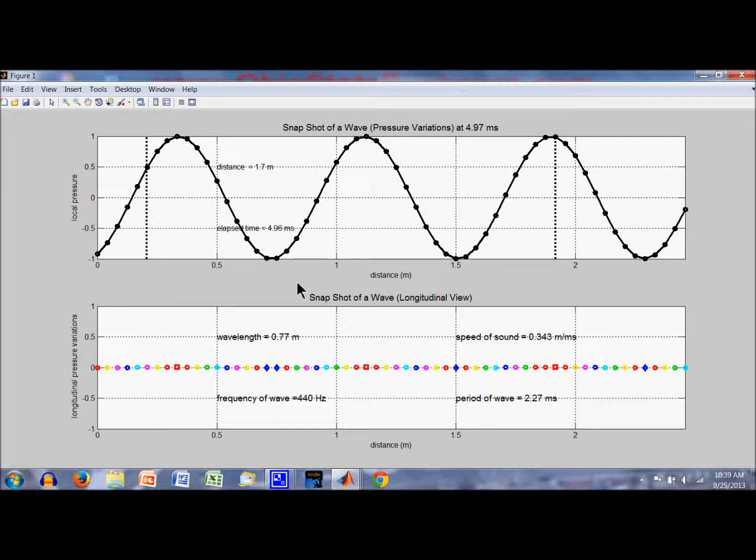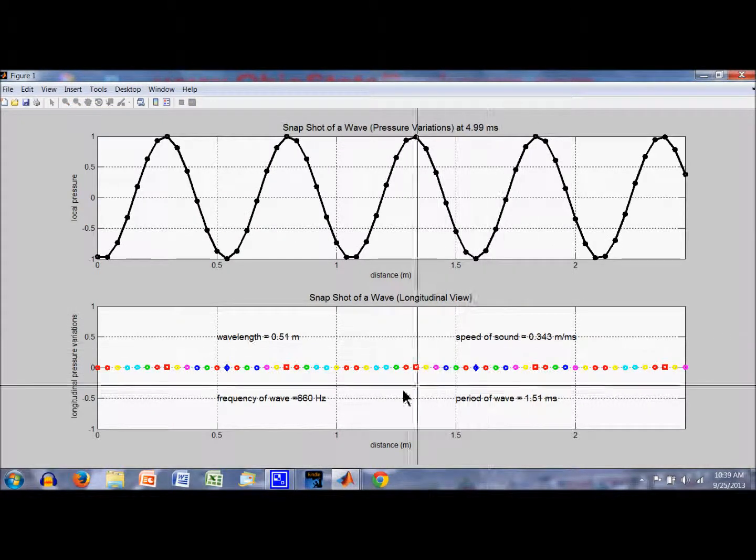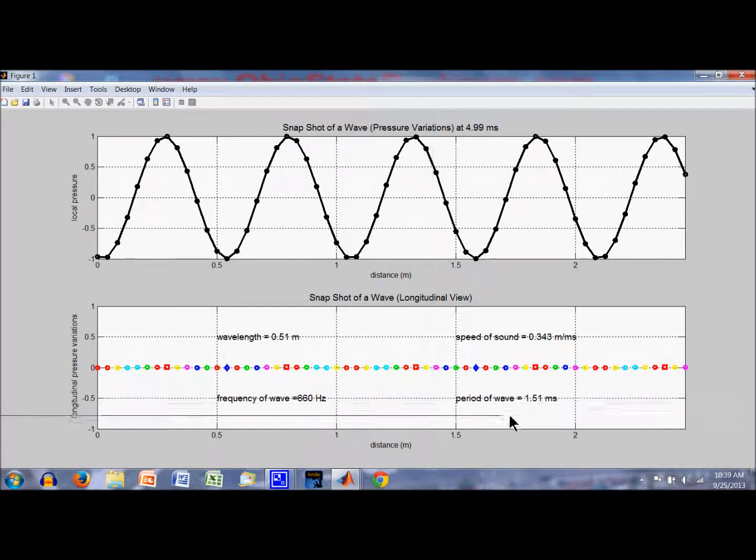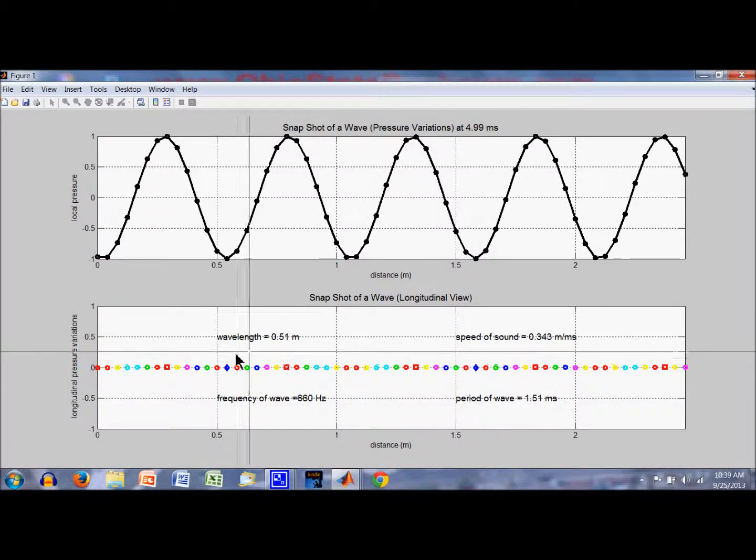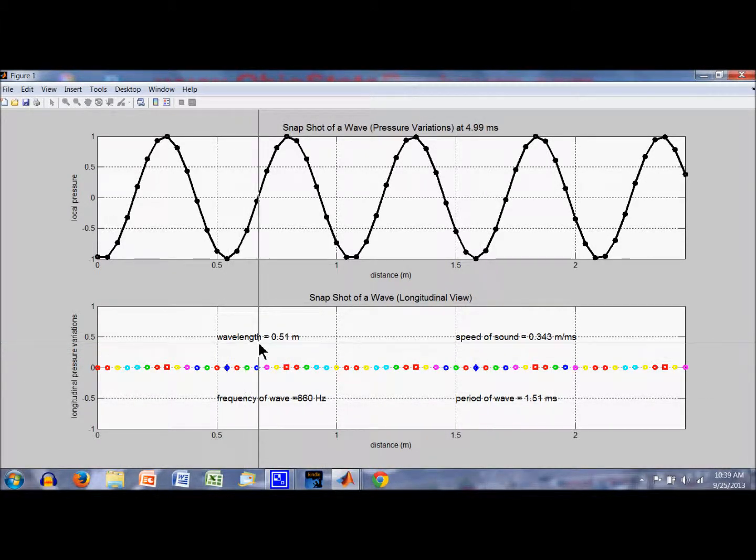Let's repeat the experiment with a wave that's got a higher frequency. Now the frequency is 660 hertz. The period of the wave is 1.51 milliseconds instead of 2.27 milliseconds. The speed of the sound is the same. The wavelength is now shorter. It's 0.51 meters.